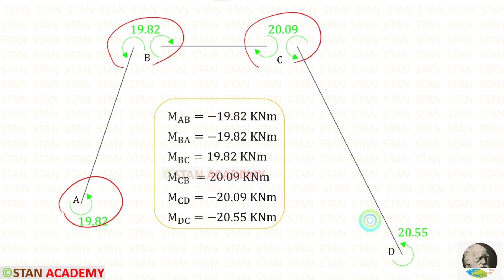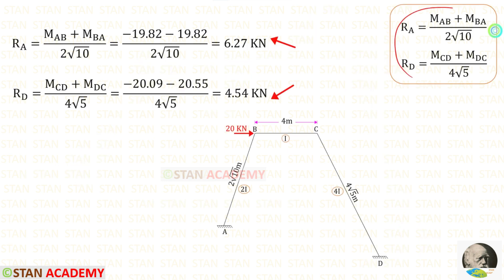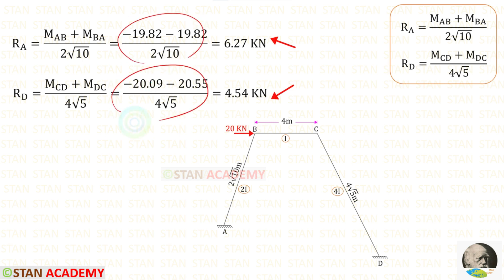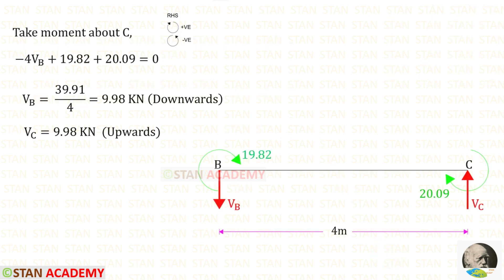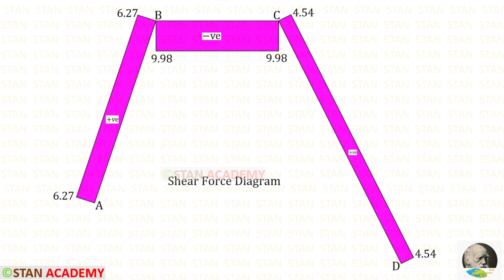Using these directions, we can draw the bending moment diagram. Here you can see the bending moment diagram. Using the expressions for RA and RD, we will get negative values, meaning the assumed direction is incorrect — RA and RD will each be acting in the opposite direction. Now let us take member BC and find the reactions VB and VC. By taking moment about C we can find VB. Since there is no load in member BC, VB and VC will have the same value, but VB will be acting downwards and VC will be acting upwards. Here you can see the shear force diagram. Now we are going to end this session. Thank you for watching this video.